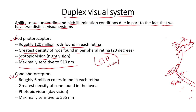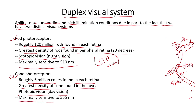As opposed to rods, which see black and white or dim light, cones number roughly 6 million in the retina and are mostly concentrated in the fovea. Greatest density of cones is found in the fovea. Cones are the receptors that help you see color and help you see brighter objects. They perform photopic vision — day vision — with the most accuracy, and are maximally sensitive at 555 nanometers.